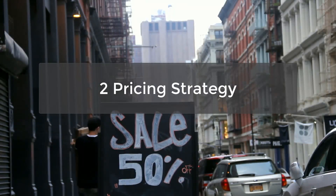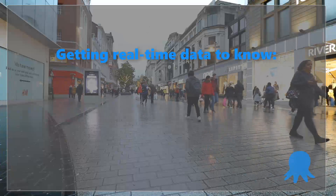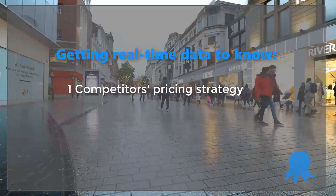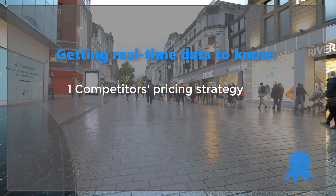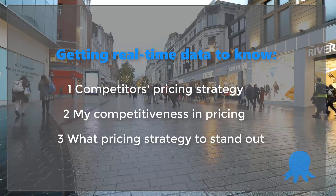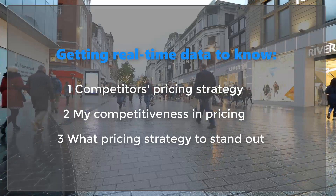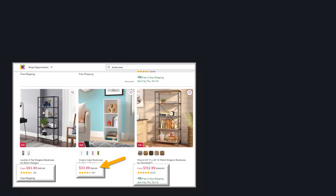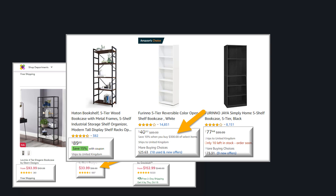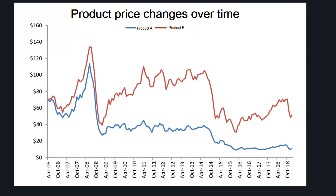Second, pricing strategy. By getting real-time data, especially during seasonal campaigns, we can really get to know how my competitors price and how competitive I am in the market in terms of pricing, and what pricing strategy at what time can make me stand out. You can get pricing information from Wayfair, Amazon, Target, and every e-commerce website accessible. With price data over time, you can build a model of price tracking to understand market changes.